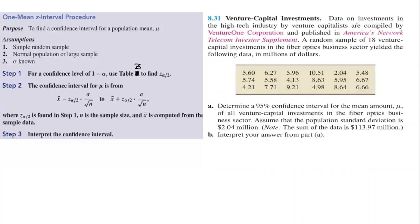Venture capital investments. Data on investments in the high-tech industry by venture capitals are compiled by Venture One Corporation and published in America's network telecom investment shipment. A random sample of 18 venture capital investments in the fiber optics business sector yielded the following data in millions of dollars. In part A, determine a 95% confidence interval. So we have to find the 95% confidence interval.